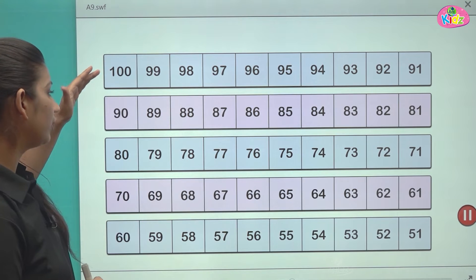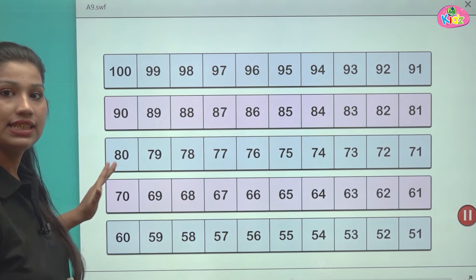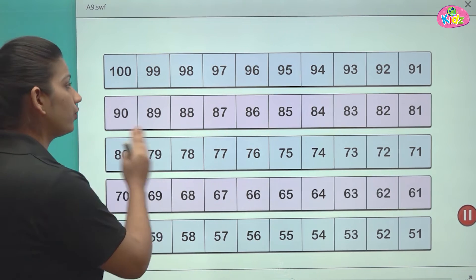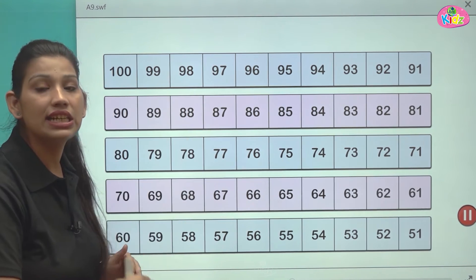It comes like by 100, 90, 80, 70, 60. This is all the pattern. You have to write the number in the decreasing order.